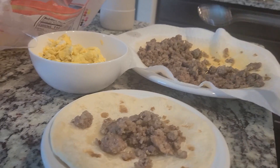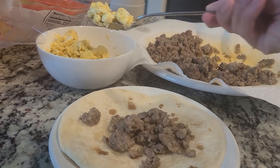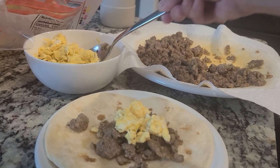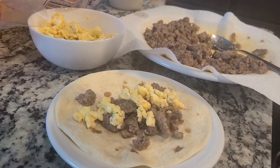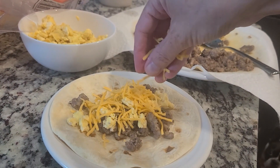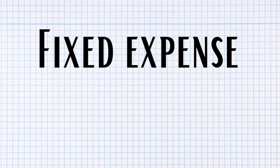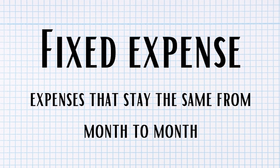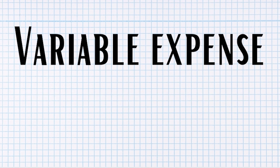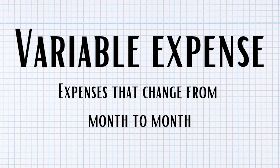Great job! Now let's assemble all of the breakfast tacos and make some profit. We have a couple more vocabulary words to learn about. We've been talking about expenses, and there are two different types. Fixed expenses stay the same from month to month. Variable expenses are expenses that change from month to month.